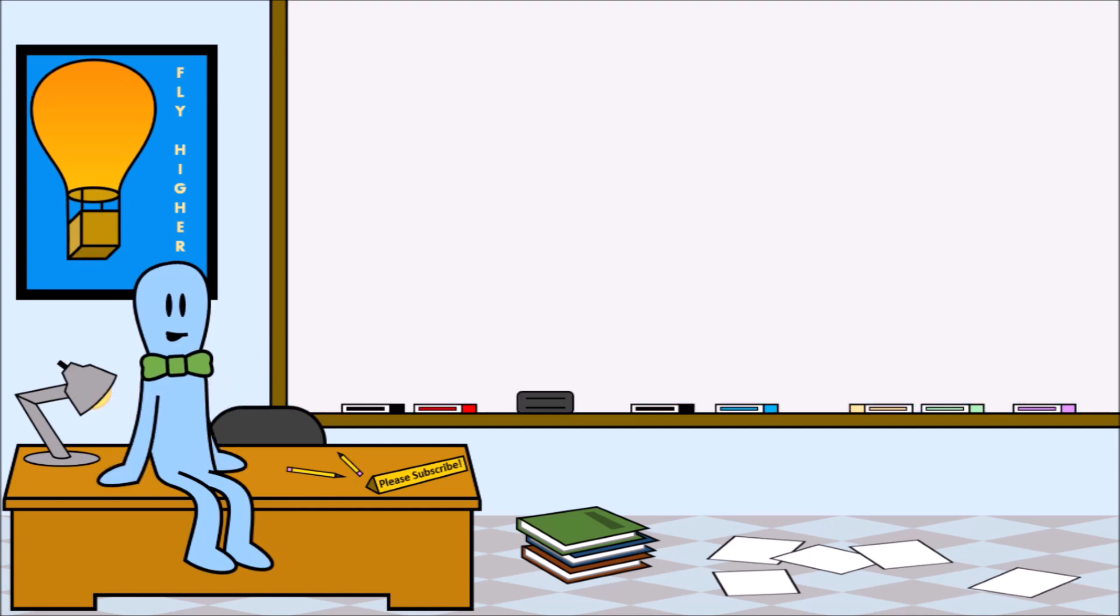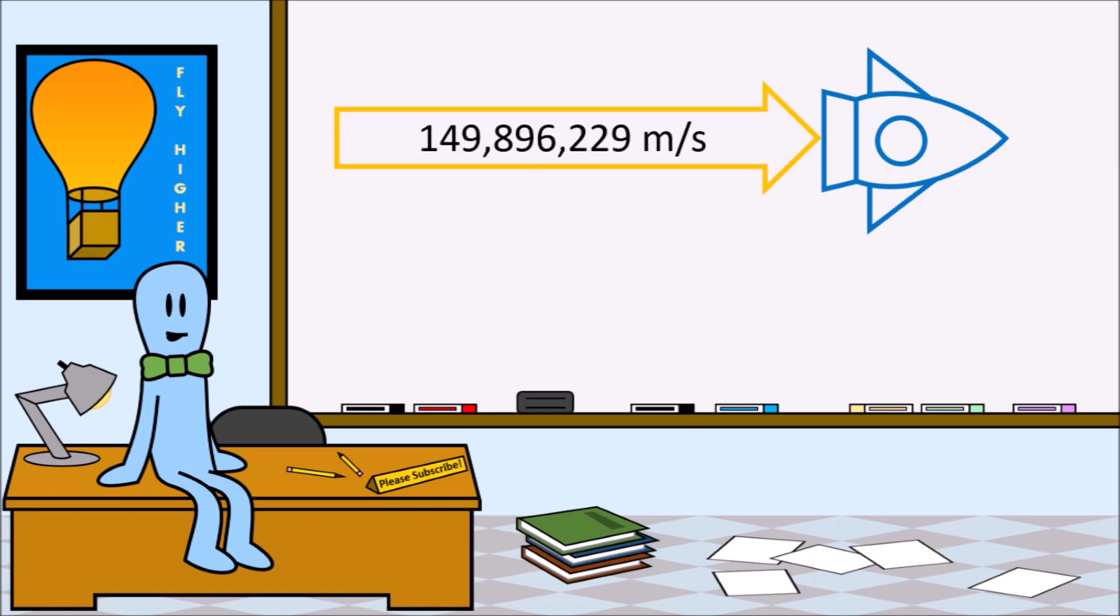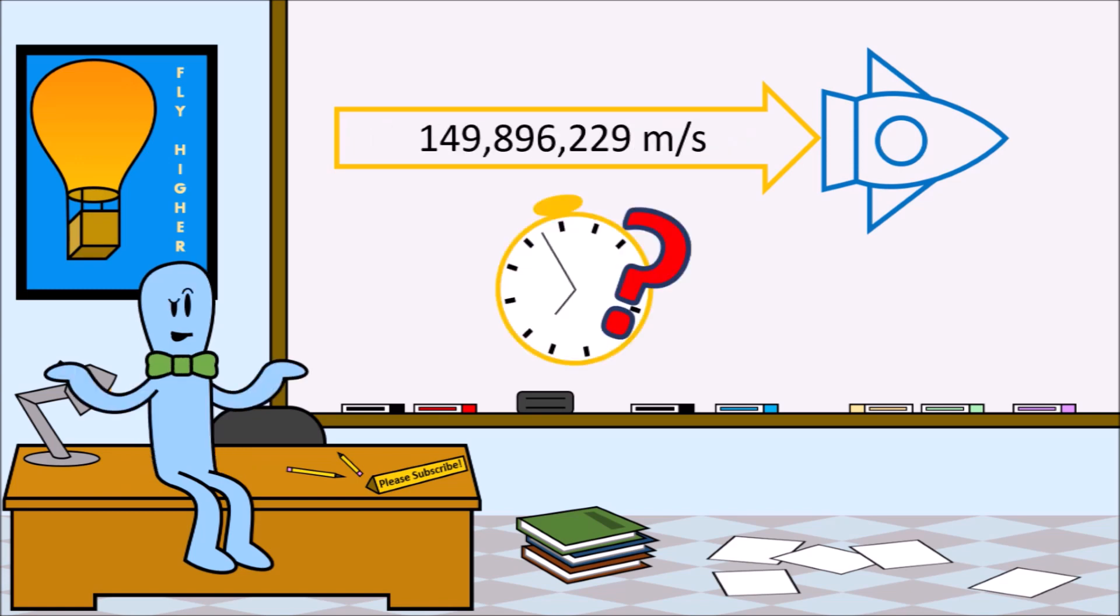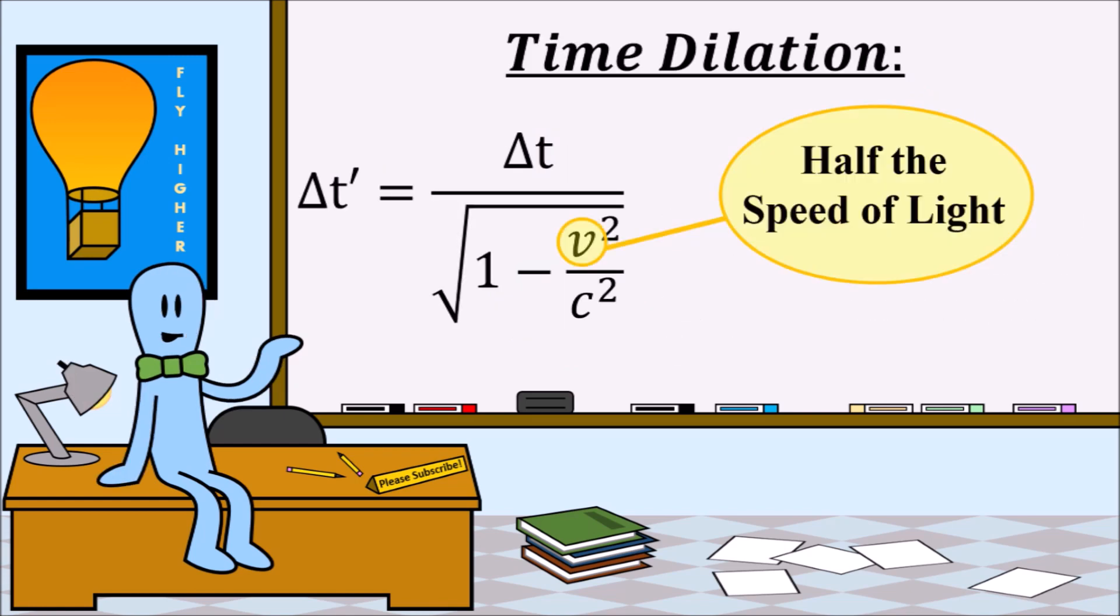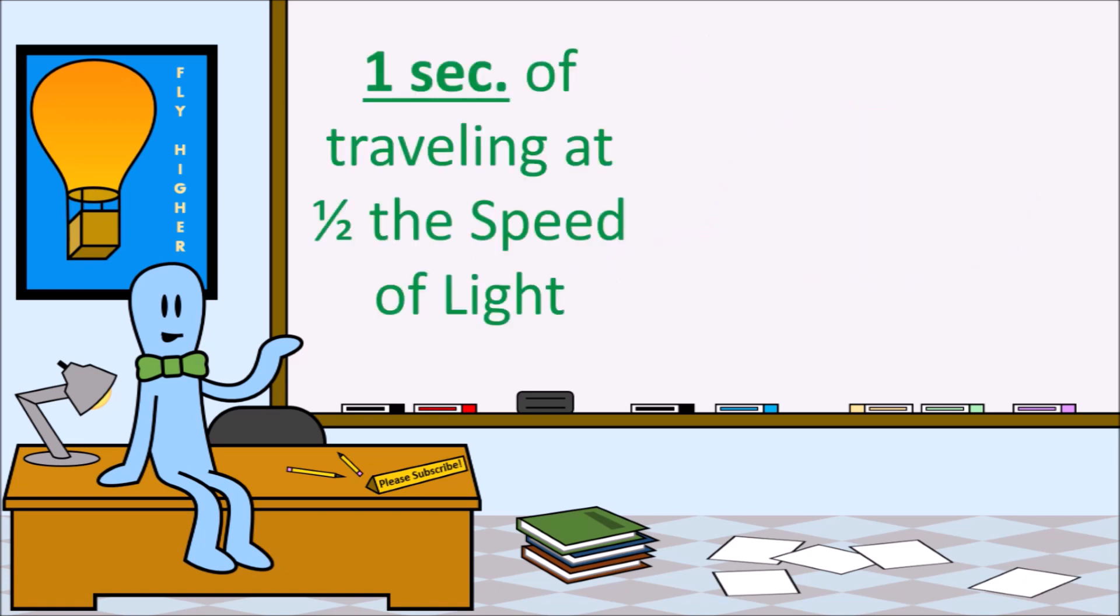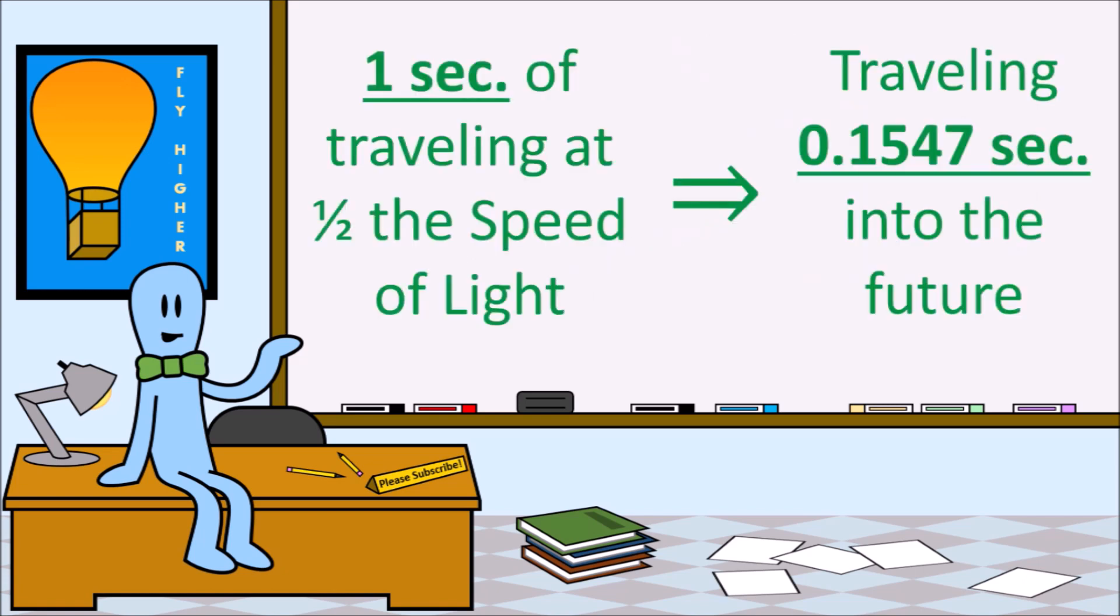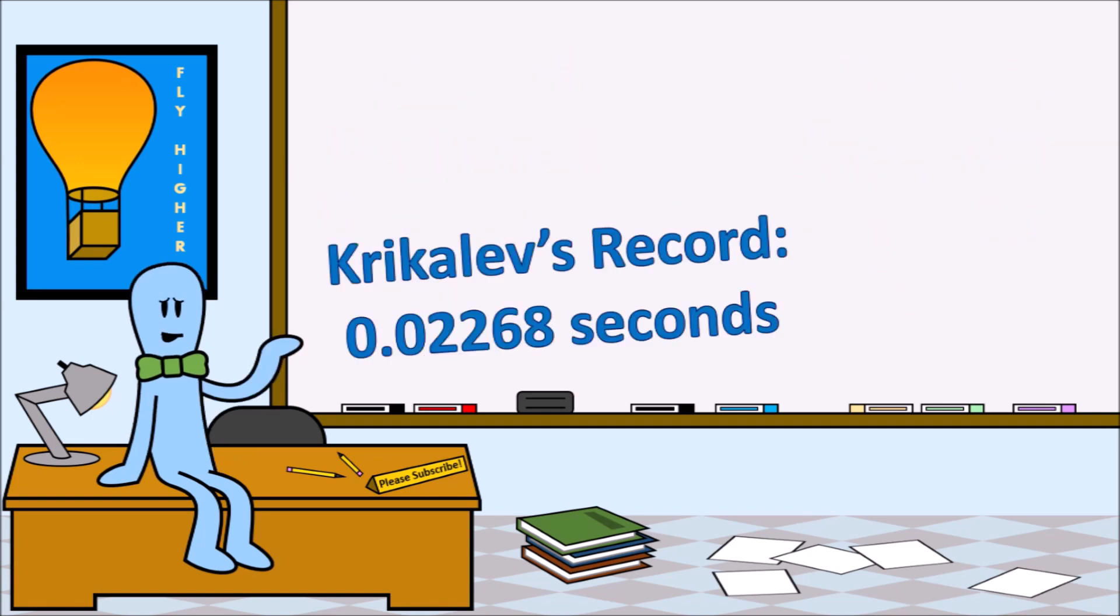If we were in a spaceship moving at half the speed of light, 149,896,229 meters per second, then how much would we travel into the future? According to Einstein's time dilation equation, when the velocity is half the speed of light, for every one second you are traveling, you are only traveling about 0.1547 seconds into the future. That's a little better. You could beat Krikalev's time travel record in less than a second.